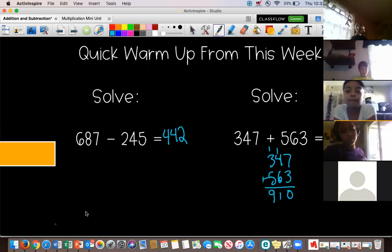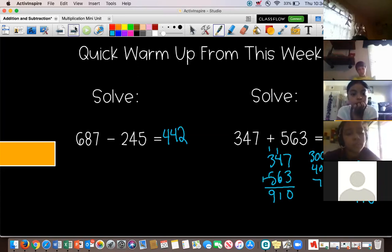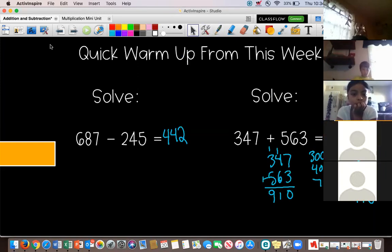Okay, well, I'm going to share that just as a refresher. So, adding by place will be if we took the 100 place and did 300 plus 500 equals 800. And then we did 40 plus 60 equals 100. And then we did 7 plus 3 equals 10. And then we added all the 1s place, the 10s place, and the 100s place to get 900 and 10.